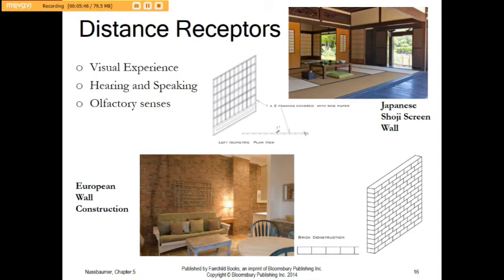We have two types of receptors. Distance receptors are things at a distance to us — something we can see, hear, or smell. The thinness of paper walls versus the thickness of brick walls shows that people have different expectations of acoustical privacy in these two environments.